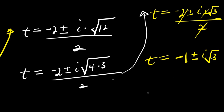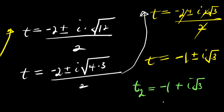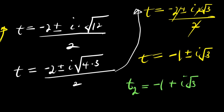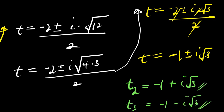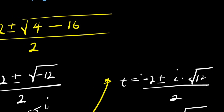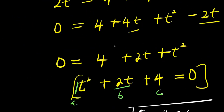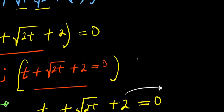So we have two complex solutions: t equals negative one plus i root three, and t equals negative one minus i root three. Together with the real solution t equals two, we have found all three values of t.